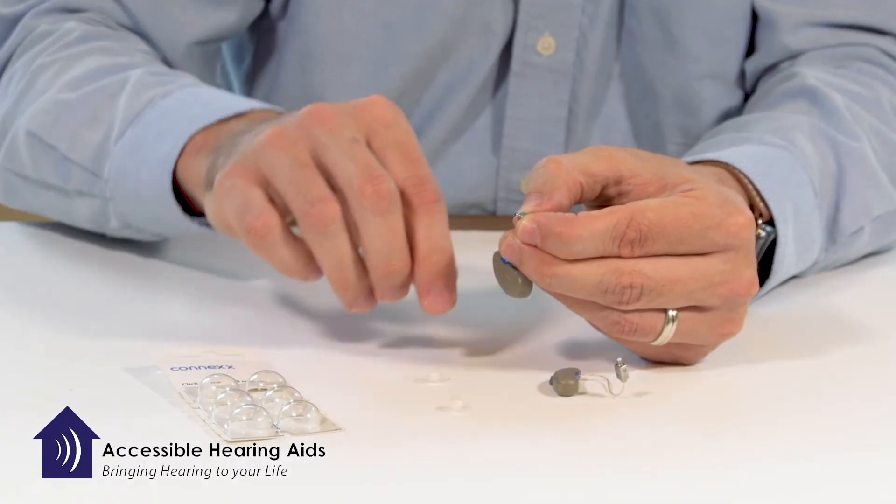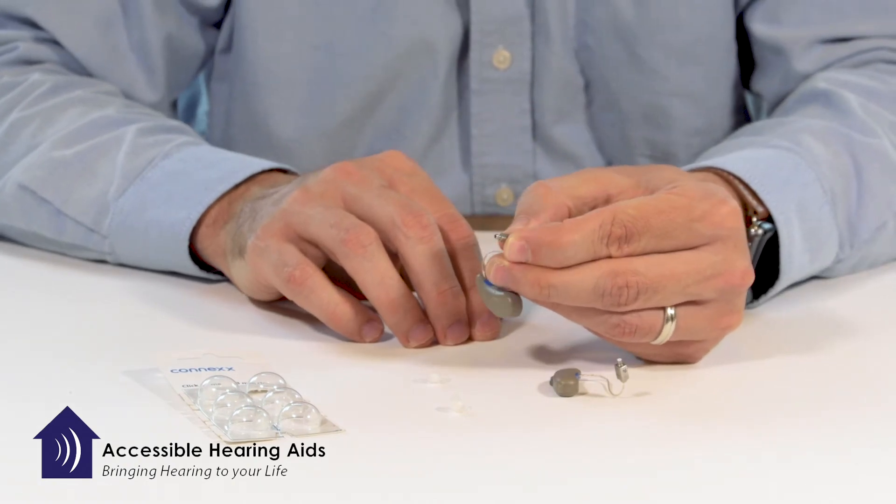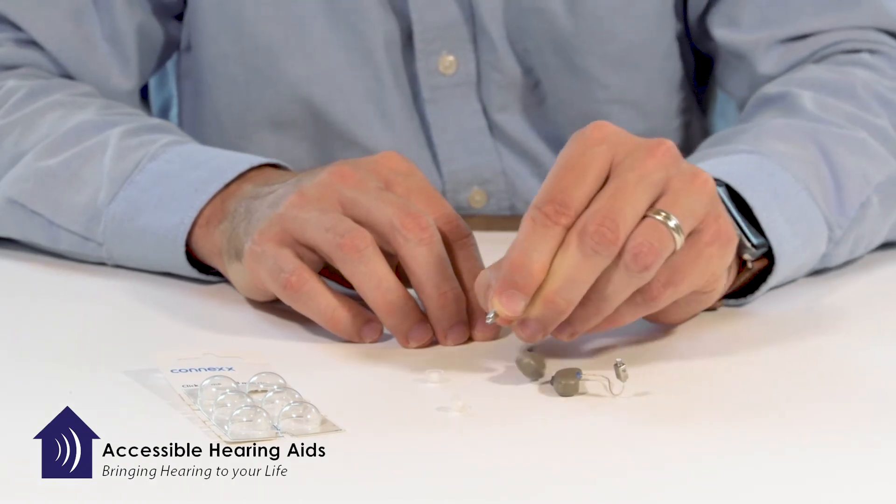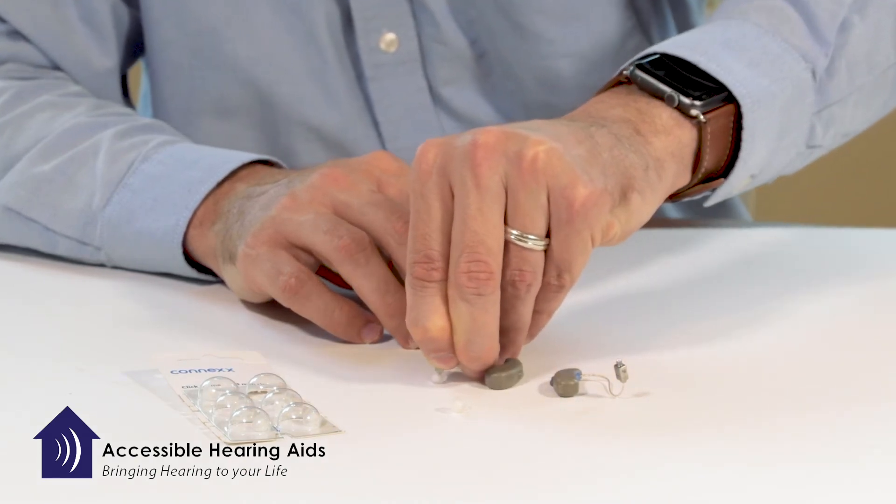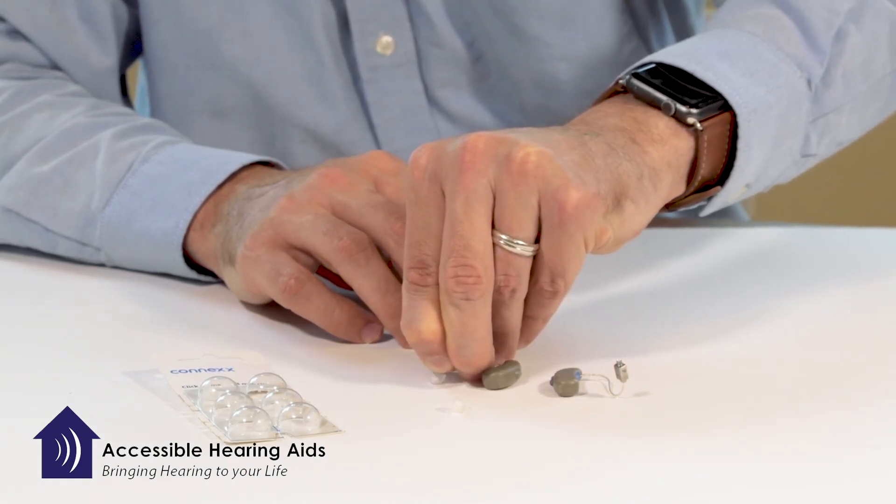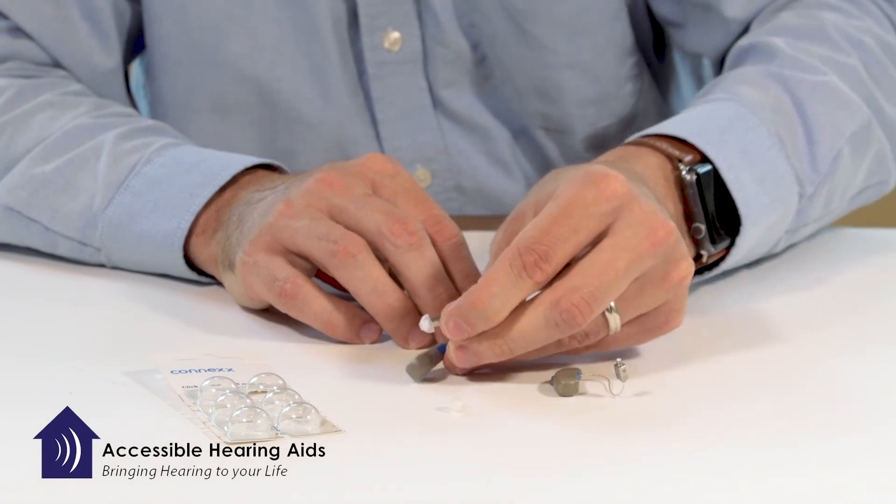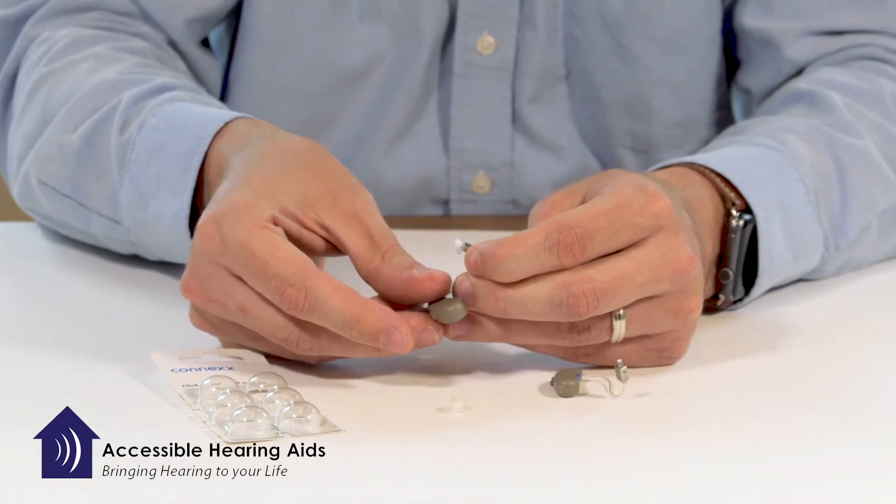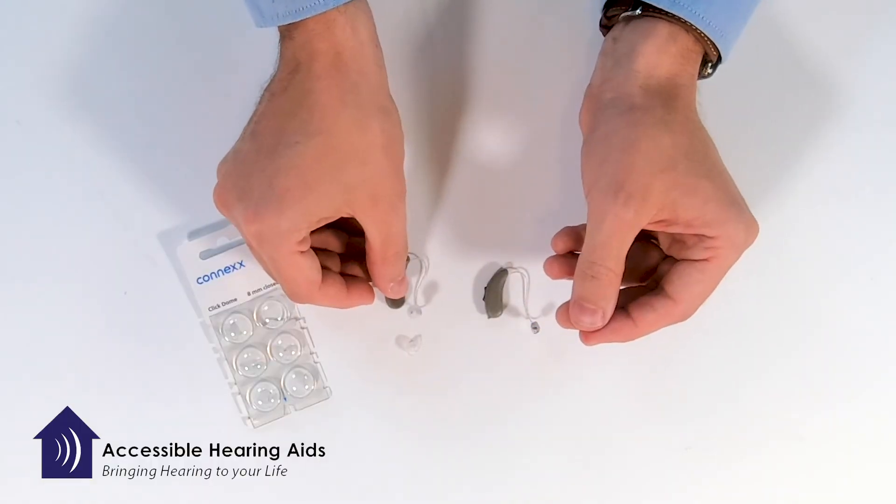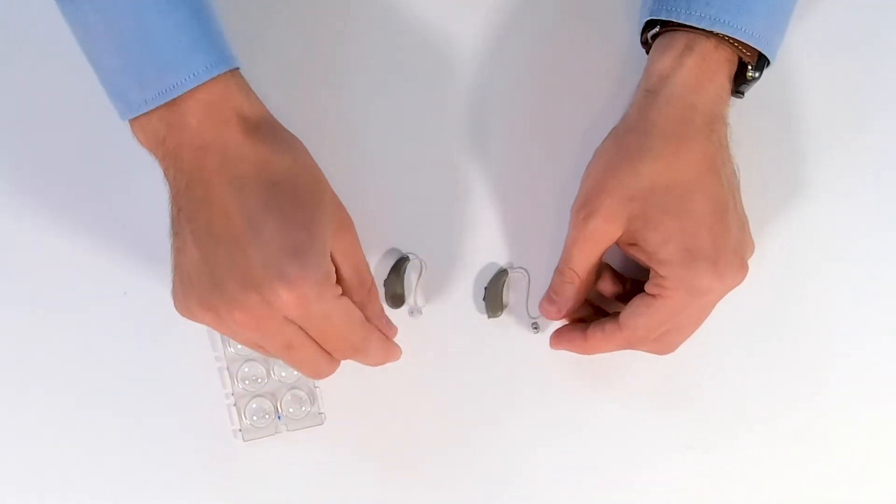You can also lay the tip down on the table and just gently line up the receiver into that hole, and then just push straight down and it will snap. Once it's snapped, you can give it a tug to make sure it's secure.